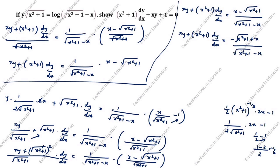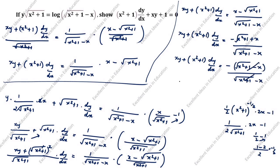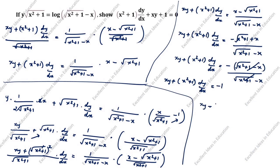After cancellation, xy + (x²+1) dy/dx = [x − √(x²+1)] / (√(x²+1) − x) = −1. So xy + (x²+1) dy/dx = −1. Rearranging: (x²+1) dy/dx + xy + 1 = 0. This is exactly what was to be proved. Hence proved. This is the first method, using the product rule.